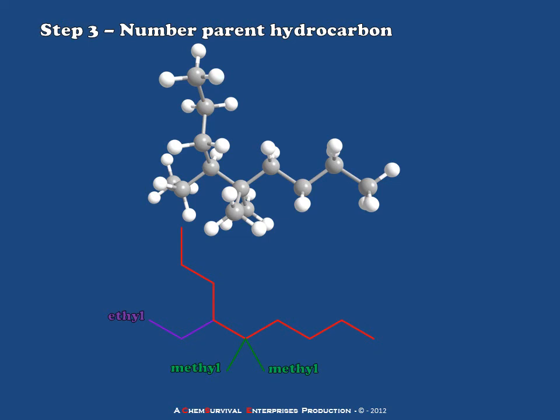Step three, I'll number the parent hydrocarbon. Again, considering the numbering scheme from both ends and making my decision based upon the lowest possible numbering. Labeling from left to right across the screen gives me an ethyl at position 4 and my methyl is at position 5. If I instead number in the other direction, my ethyl is at position 6 and my methyl is at position 5. Therefore, the lowest possible number comes from my numbering scheme at the top of this molecule, which would be a 4-ethyl-5,5-dimethyl. This is the numbering scheme I will use.